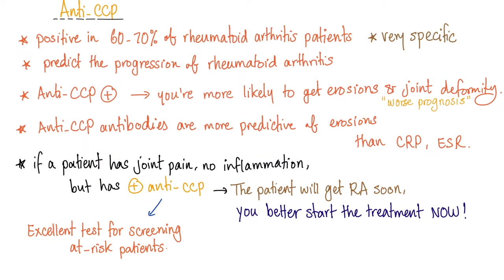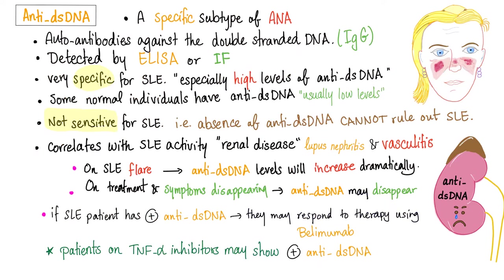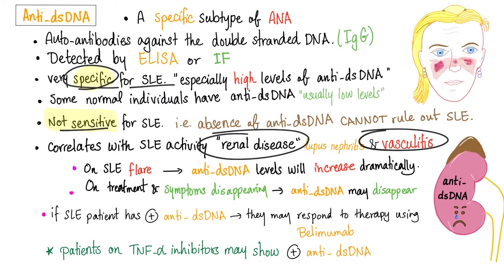If rheumatoid factor is more sensitive for rheumatoid arthritis, anti-CCP is more specific for rheumatoid arthritis. Anti-double-stranded DNA is specific for lupus, but not sensitive. They correlate with disease activity, particularly lupus nephritis and lupus vasculitis.